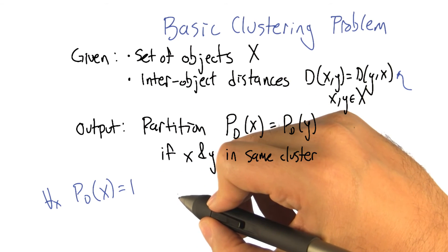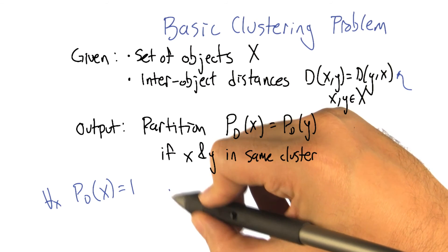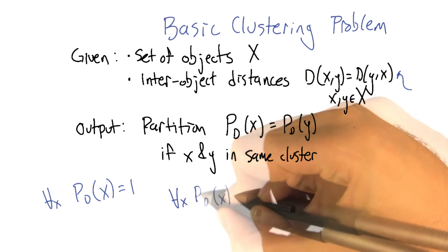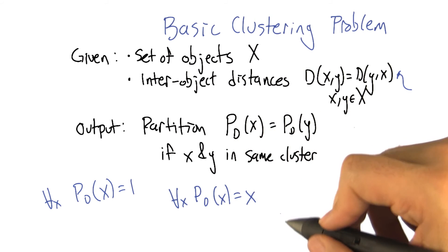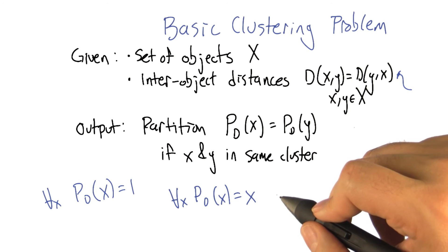That's right. Here's another trivial one: every single object is in its own partition. Yes. Good. That's the other one I was thinking of, which maybe we could write like this. We just use the object name itself as the name of the cluster. And now every object is in its own cluster.